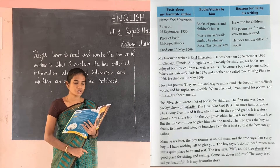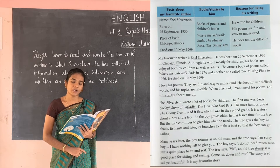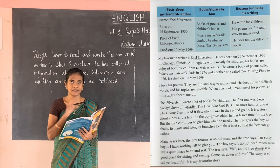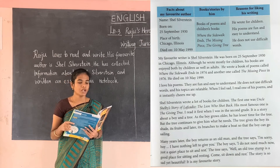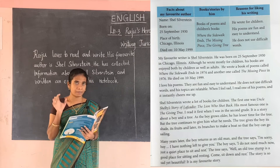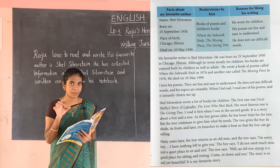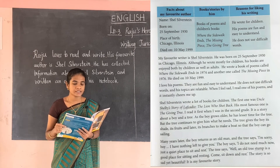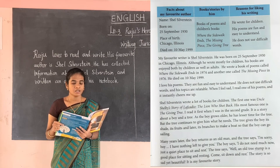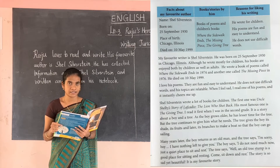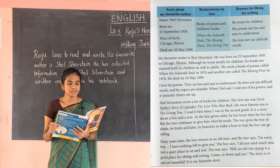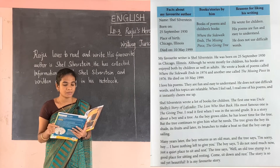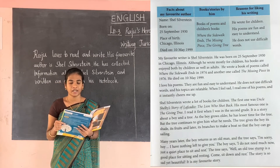In the tabular column, the things listed are: facts about my favorite author, books or stories by him, and reasons for liking his writing. These are the titles. For your better understanding, they are given in the tabular column — a brief biography of Shel Silverstein. The name of the author is Shel Silverstein, born on 25th September 1930.